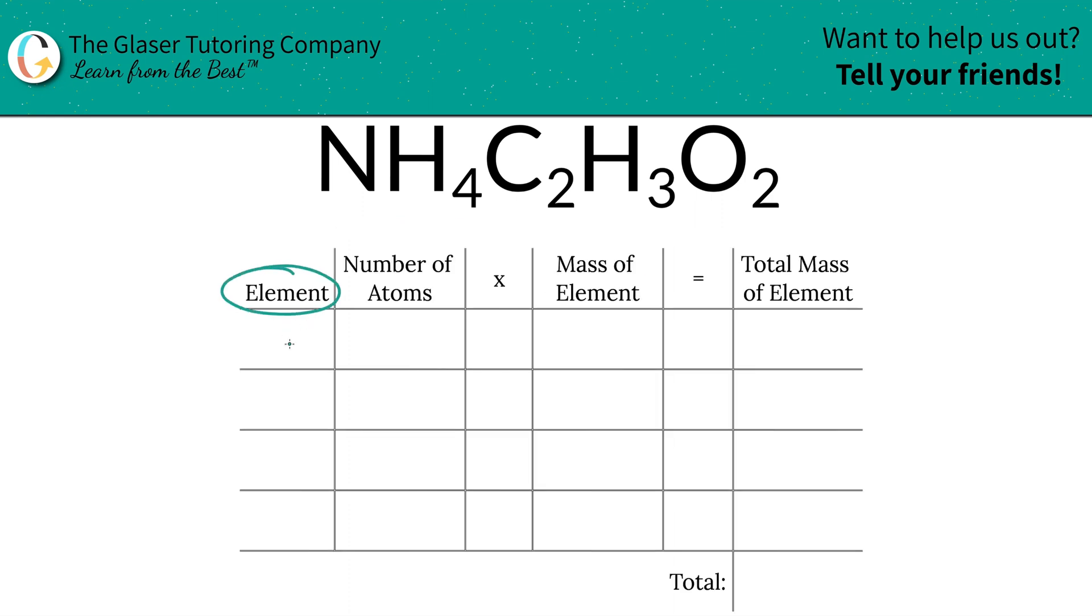Bam, so the first thing is we're going to write the elements we see in the compound. We've got nitrogen, hydrogen, carbon, and oxygen.